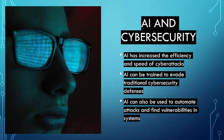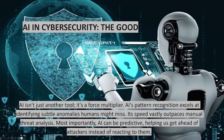Attackers can use AI to develop and test new attack vectors, while defenders can use AI to detect and stop attacks. However, AI can also be used to evade detection and attack vulnerable systems. AI has increased the efficiency and speed of cyber attacks. AI can be trained to evade traditional cybersecurity defenses and automate attacks to find vulnerabilities. On the defensive side, AI can find patterns and identify anomalies that humans might miss, it outpaces manual threat analysis, and most importantly AI can be predictive — helping us get ahead of attackers instead of just reacting to them.